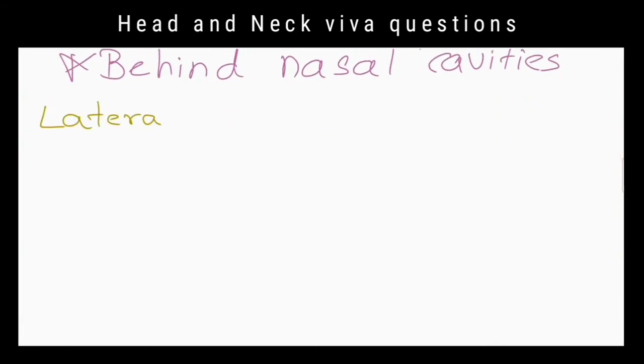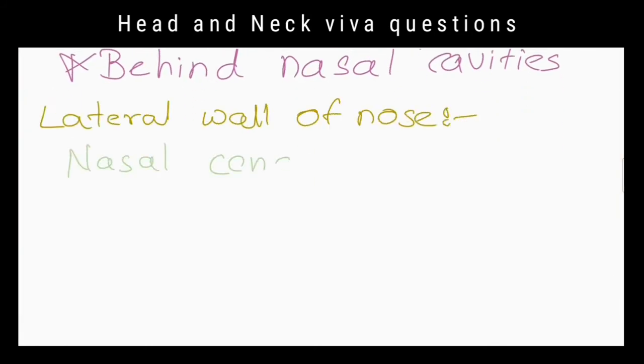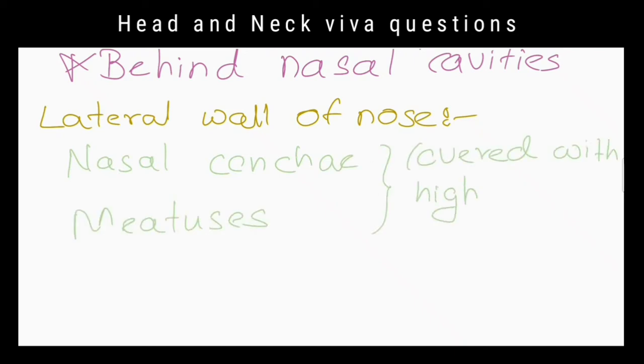What can you see in the lateral wall of the nose? Nasal conchae and meatuses covered with highly vascular mucoperiosteum.